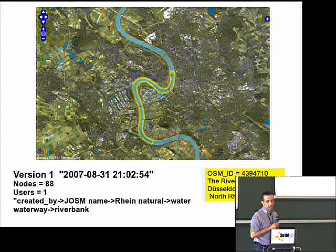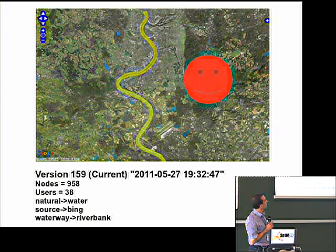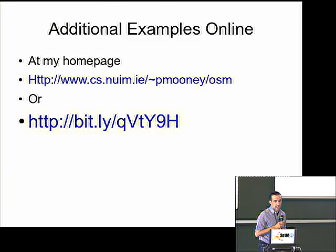The third example is from Düsseldorf — the River Rhine. The creation date was 2007. We have a problem of self-intersection. It's still there up to the middle of May, but it's been fixed and it's all sorted.